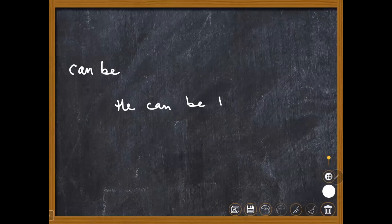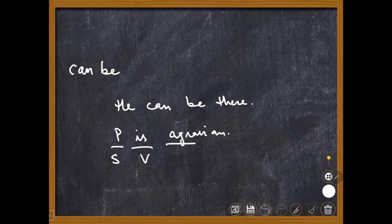Okay, now when I'm talking about can be. It can be there. Now when we read the sentence with a complement, like Pakistan is agrarian - Pakistan is the subject, is is the verb, agrarian is the adjective. He can be there. He is the subject, can be is the verb, there is the place.